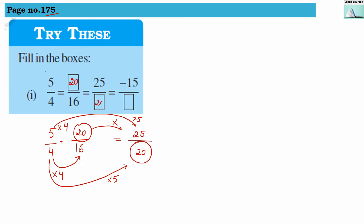The third one is minus 15 divided by a number we have to guess. We multiplied 3 by the original 5 to get 15, but since minus 15 is negative, we must multiply by minus 3. Since 5 is positive, we need a negative multiplier to get a negative result. So we multiply minus 3 by 4, giving minus 12 as our third answer.